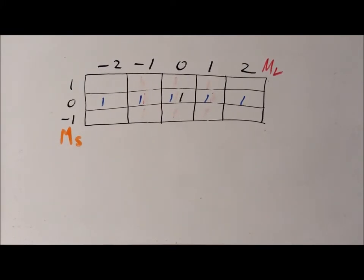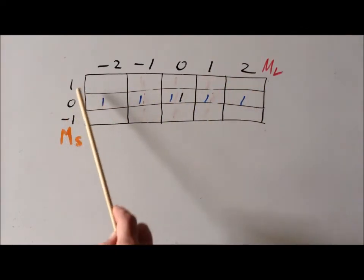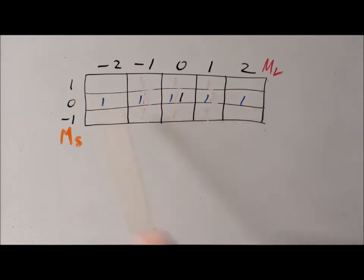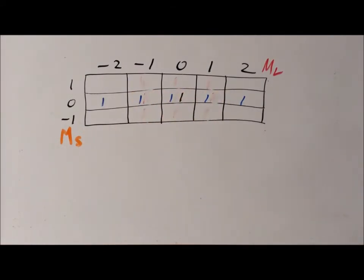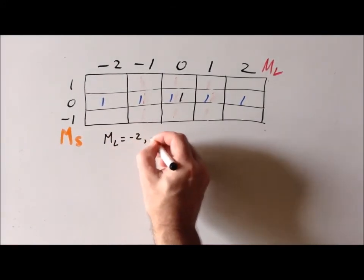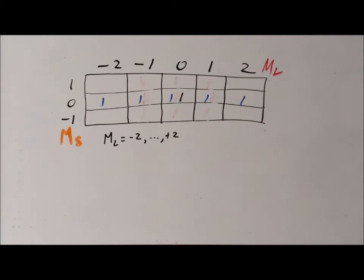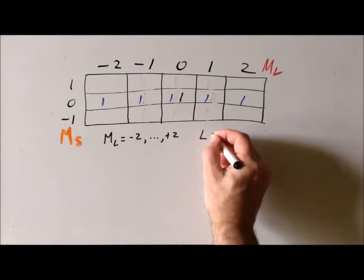After having derived the first term symbol, we continue the process. We notice that we can envision a rectangle that goes from minus two to plus two in the M sub L values, centered at the M sub S equals zero value. This is a one by five rectangle, and there is at least one blue tick mark in each of the small boxes, making it a legitimate rectangle. Big M sub L goes from minus two to plus two.